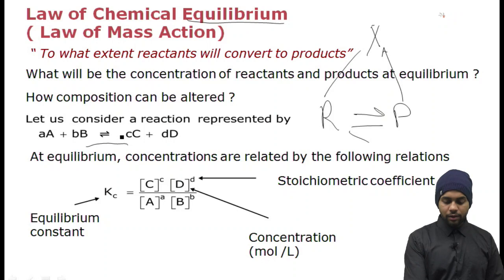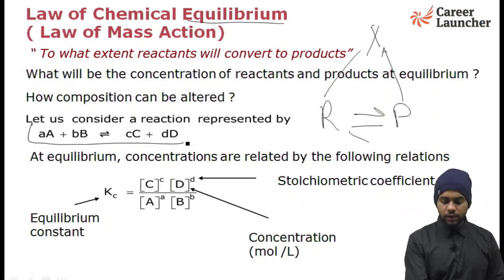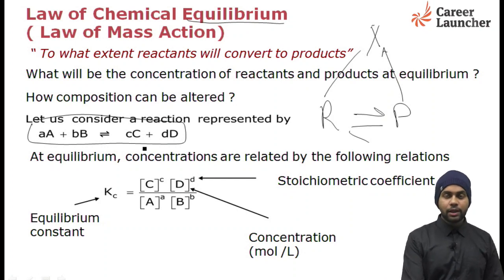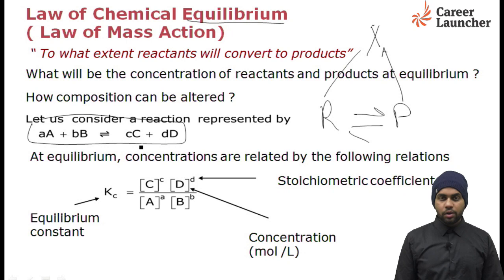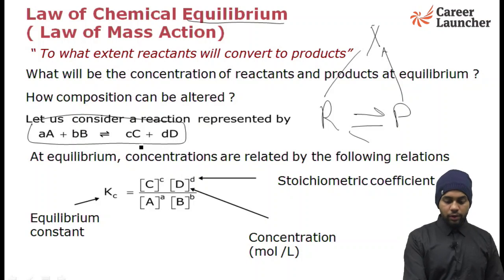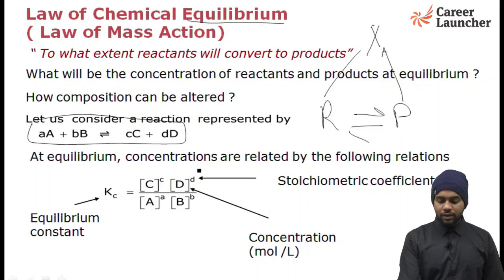Let us consider a reaction represented as: a moles of A plus b moles of B gives c moles of C and d moles of D. What would happen at equilibrium — will only C and D be present, or will A, B, C, and D all be present? As stated earlier, both reactant and product would be present and their concentrations would be fixed. At equilibrium, concentrations are related by the following relation.